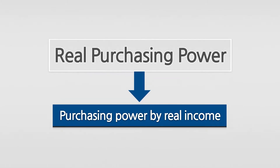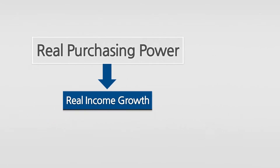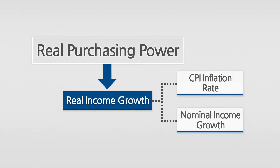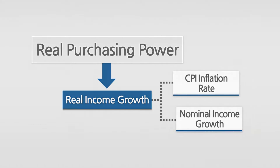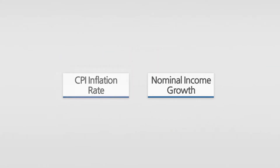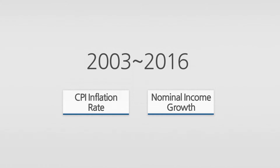Real purchasing power is a purchasing power as determined by real income, and therefore can be ascertained through real income, which reflects both the CPI and nominal income. So let's look into the CPI and changes in the nominal income from 2003 to 2016.